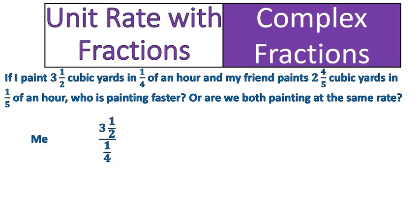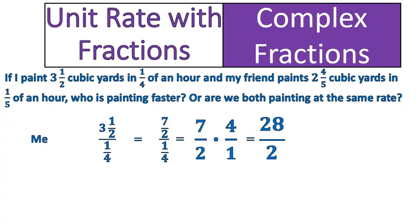Let's start with me. I did three and a half cubic yards in a quarter of an hour. I'm going to divide my painting yards by the time, convert that mixed number into an improper fraction, and divide. I'll write it directly as multiplying by the reciprocal. I multiply numerator times numerator and denominator times denominator, which gives me 28 over 2. 28 divided by 2 is 14, so my rate is 14 cubic yards per hour.